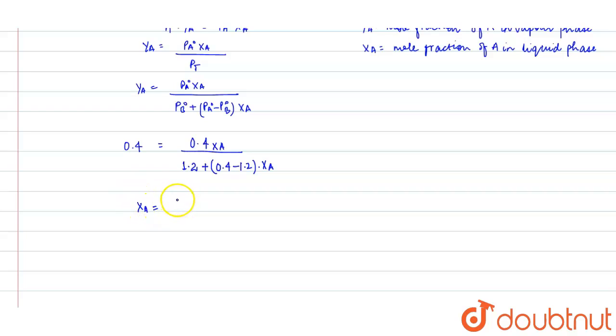which equals 2/3. So X_B will be 1 - X_A, which is 1 - 2/3 = 1/3. So X_B = 1/3.